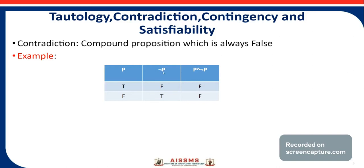Now consider an example for this. The value of P is true, then negation P is false. The value of P is false, then negation P is true. Now we have to find out what P and negation P is. For the first values the result would be false, and for the second values — when P is false and negation P is true — P and negation P would also be false. So this truth table contains only false values, so this compound proposition is called a contradiction.